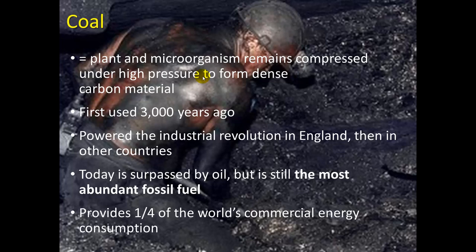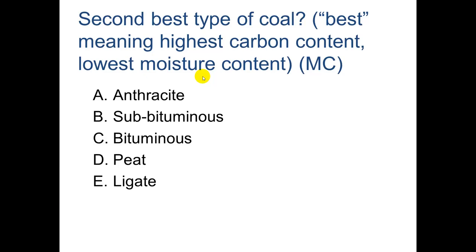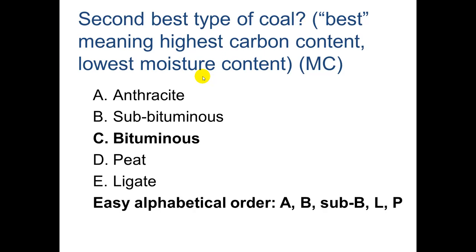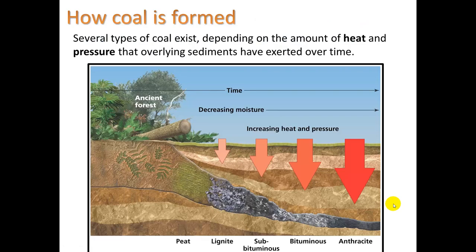The second best type of coal — best meaning highest carbon content and lowest moisture content — is bituminous. This is easy to remember because the types go in alphabetical order: anthracite, then bituminous, then sub-bituminous, then lignite, and then peat. Here we see a diagram of that progression.